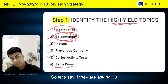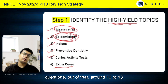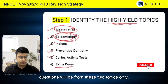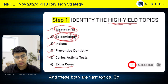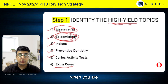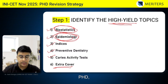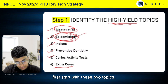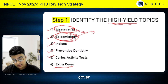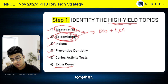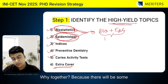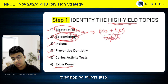If they are asking 20 questions, around 12 to 13 questions will be from these two topics only. Both are vast topics. When you are starting your revision for PhD, first start with these two topics — cover Biostatistics and Epidemiology and try to do them together, because there will be some overlapping content as well.